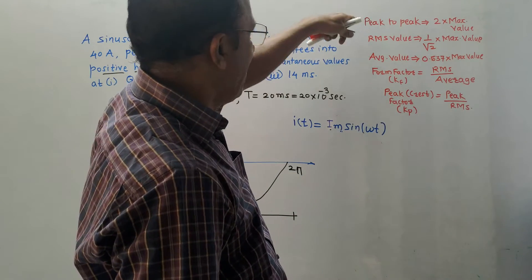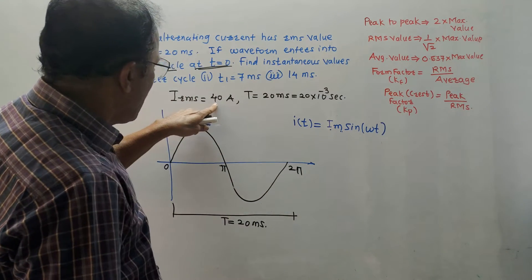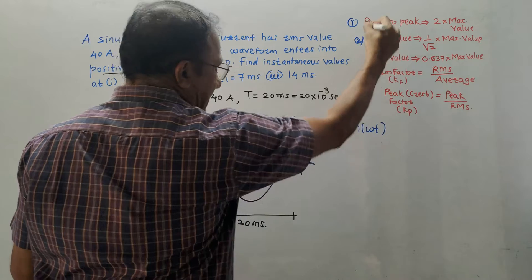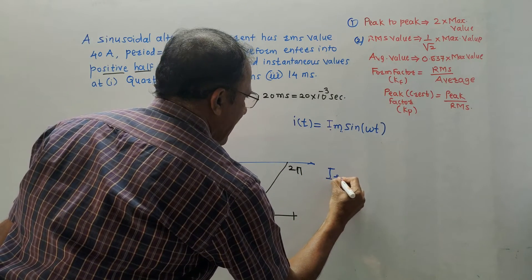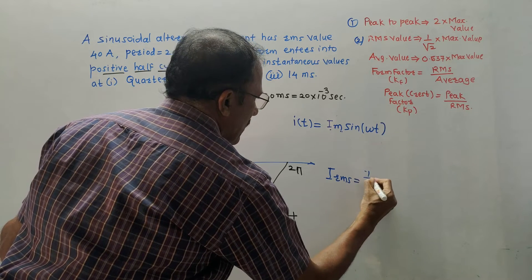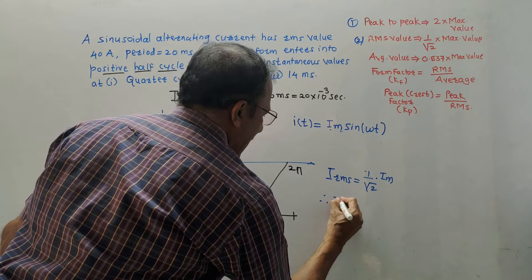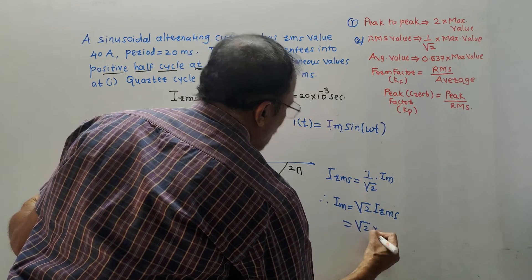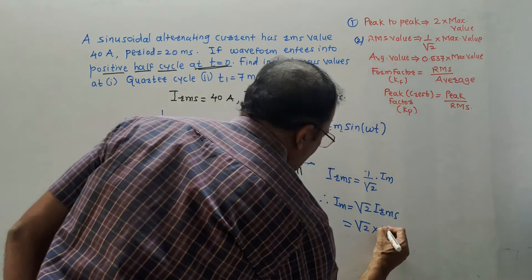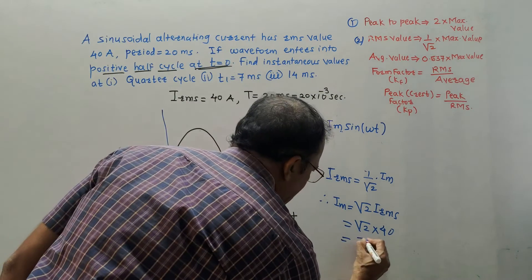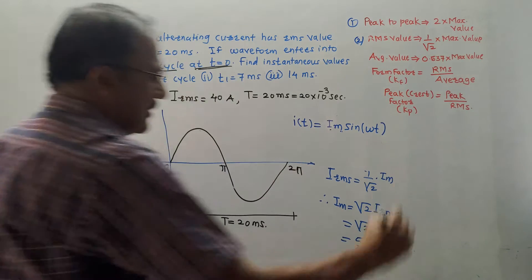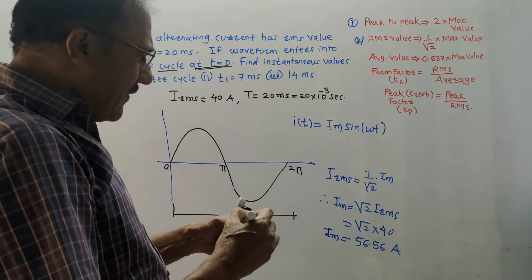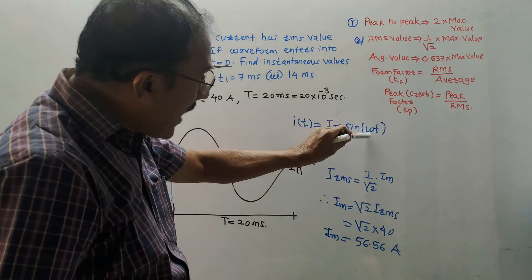To find Im, use I_rms = (1/√2) × Im, so Im = √2 × I_rms = √2 × 40 = 56.56 A. To find ω, use ω = 2πf = 2π/T = 2π / (20 × 10⁻³) = 100π rad/s. Substituting into the equation gives i(t) = 56.56 sin(100πt).